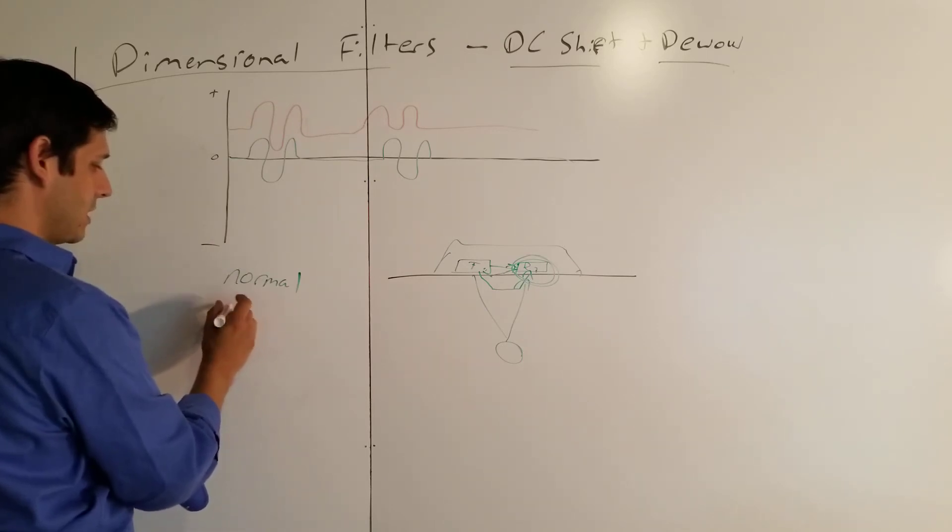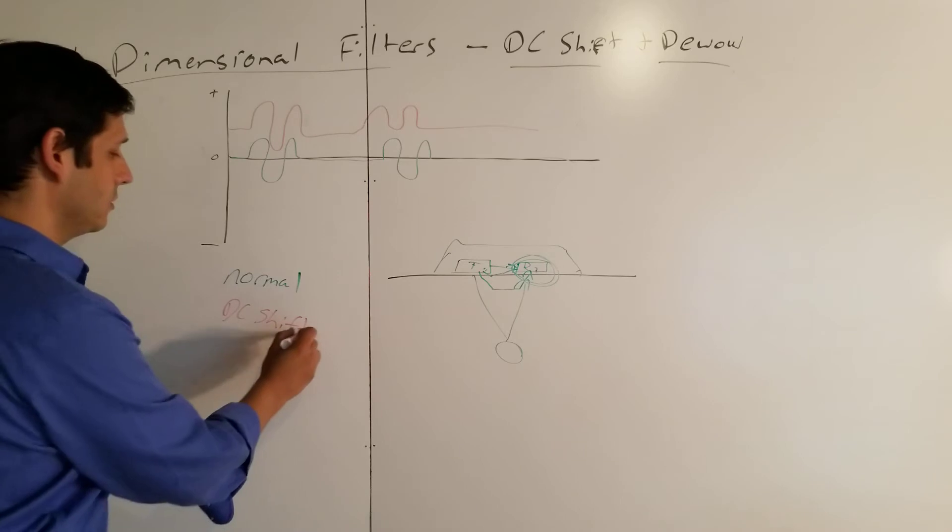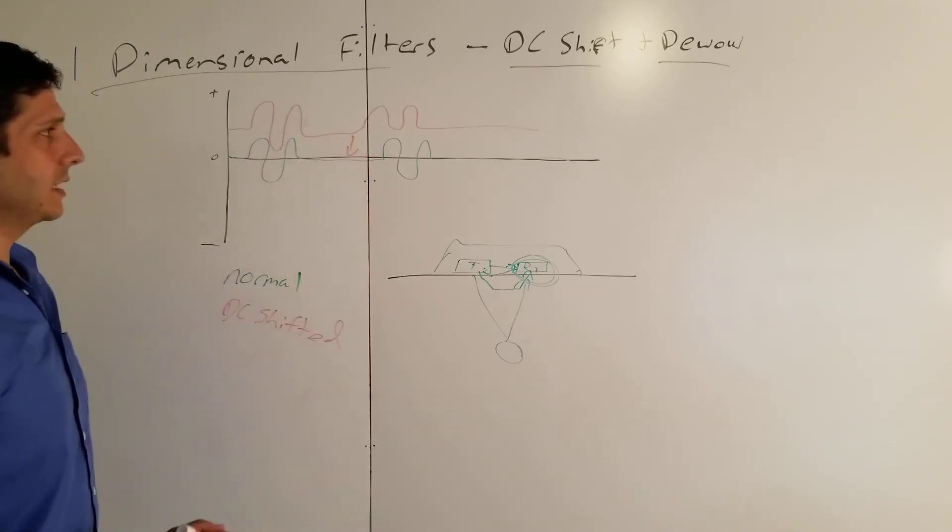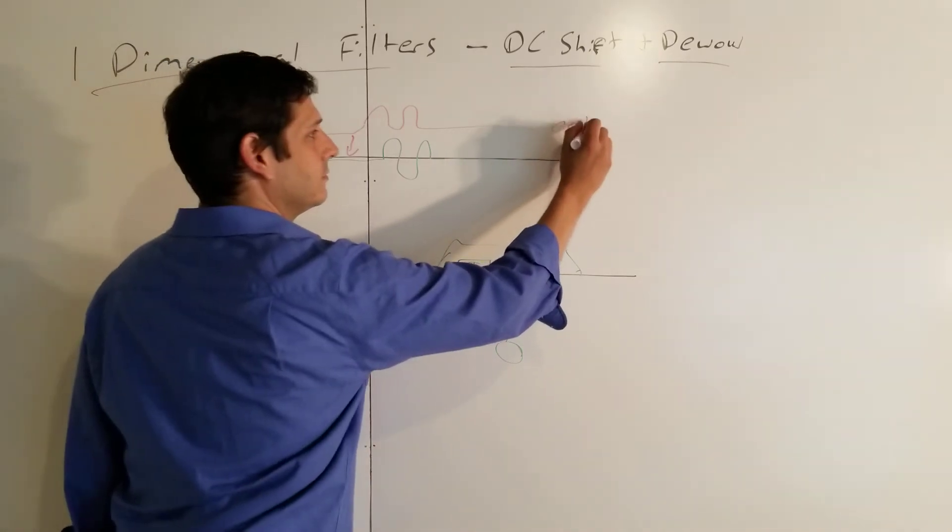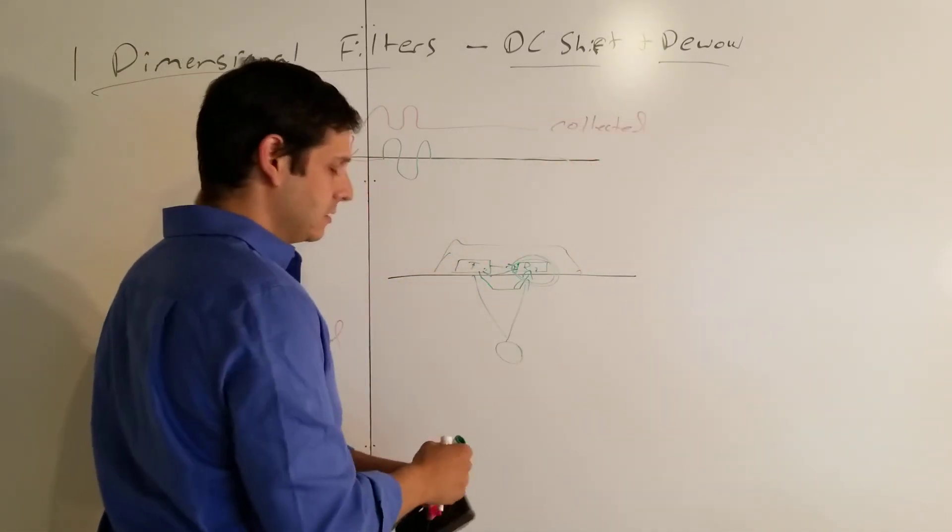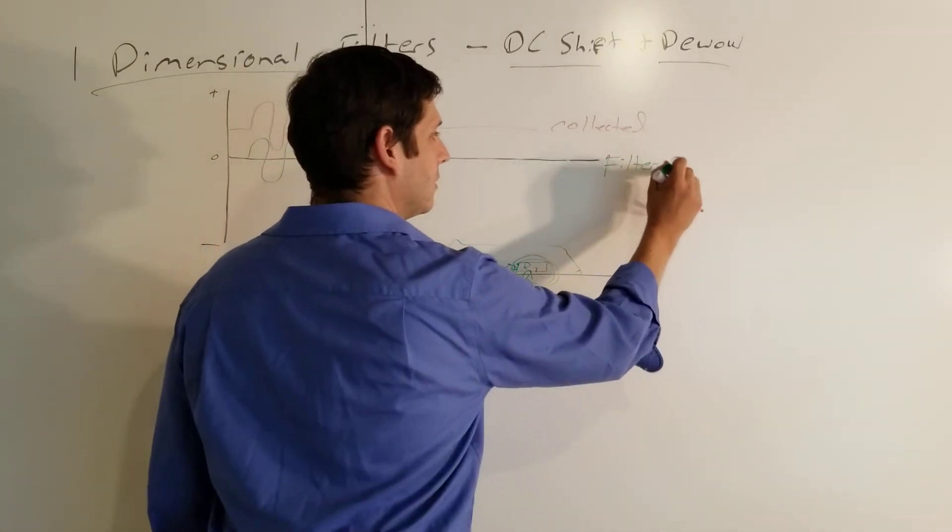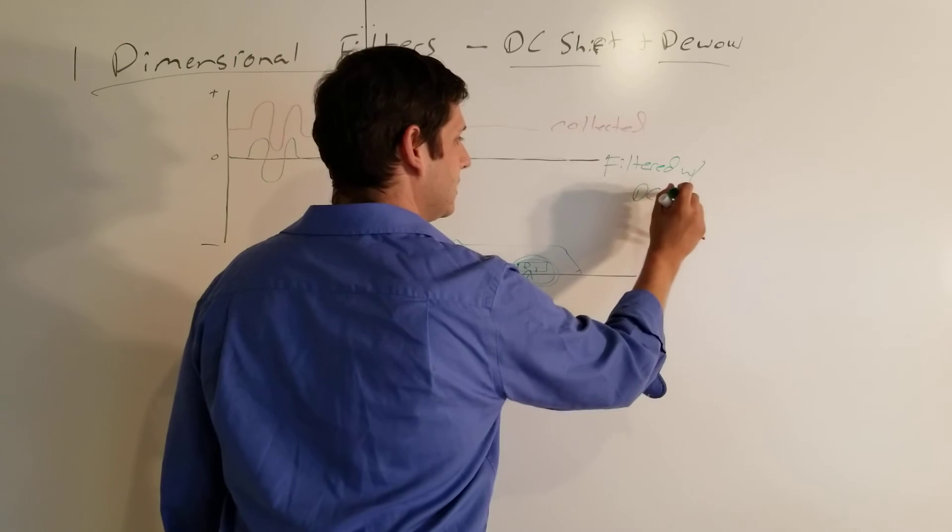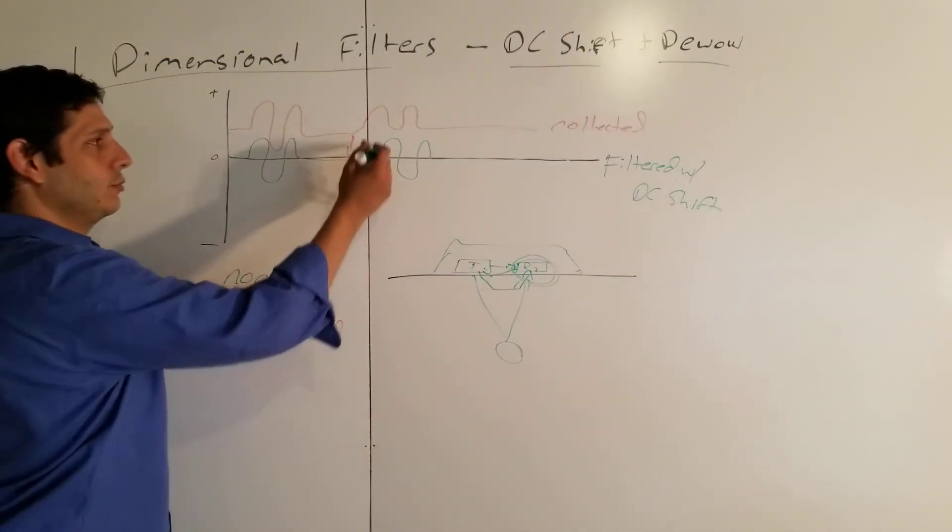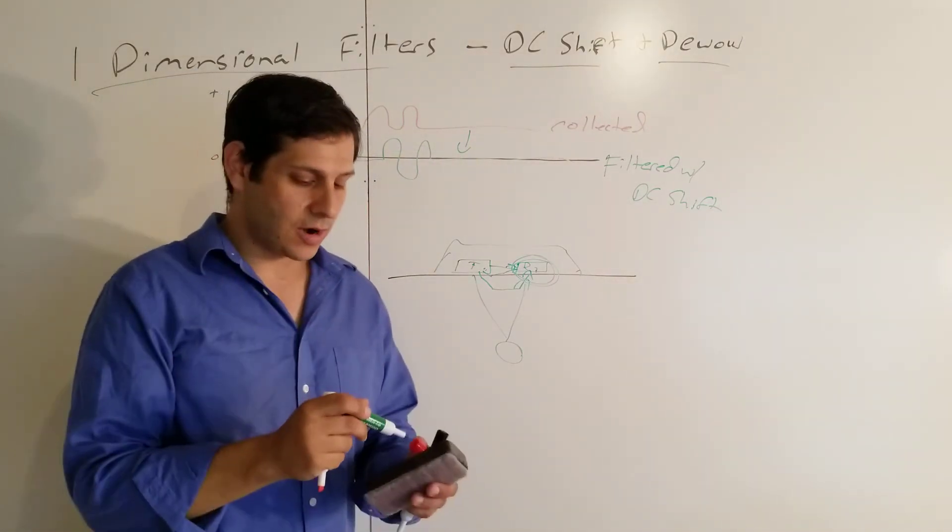That is what the DC shift does, is it takes this - this is direct current, shift, shifted. It takes this and it moves it down to here. So this is what's collected. And then, this is what's filtered. Filtered with DC shift. That's how that works. It moves from this to this. That's one problem solved.